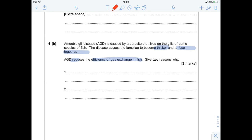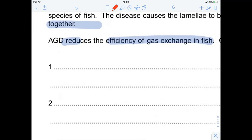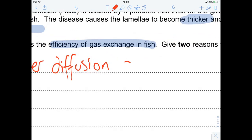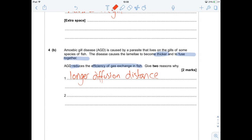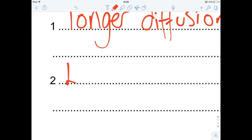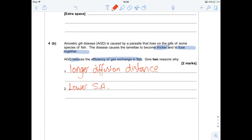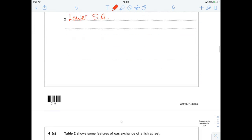So we should be thinking longer diffusion pathway. So the diffusion distance is going to be longer. That's the thickness accounted for. And if they're all fused together, we don't have all those wonderful lamellae and filaments wafting around the place. So they're going to have a lower surface area. Nice and straightforward. All the clues are in the question.